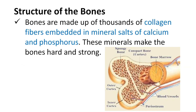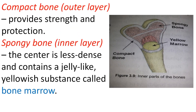The structure of bones: bones are made up of thousands of collagen fibers embedded in mineral salts of calcium and phosphorus. These minerals make the bones hard and strong. The compact bone, or outer layer, provides strength and protection. The spongy bone, or inner layer, is less dense and contains a jelly-like, yellowish substance called bone marrow.